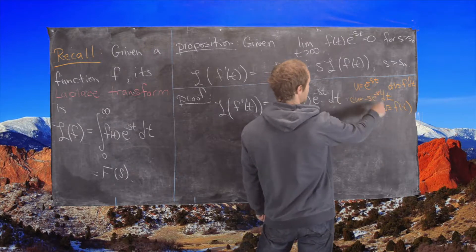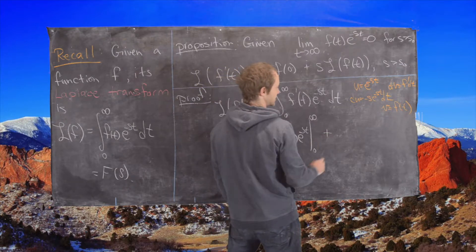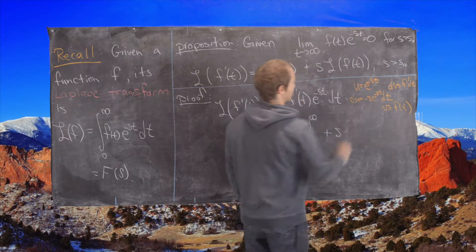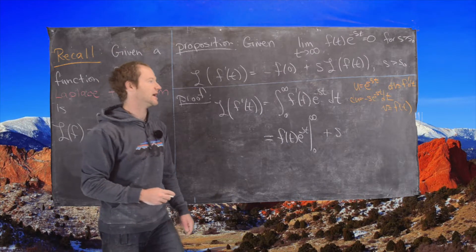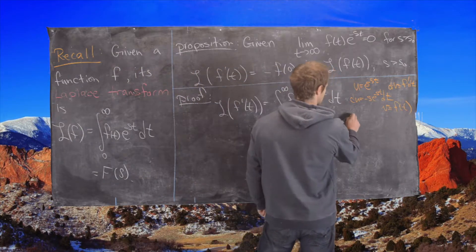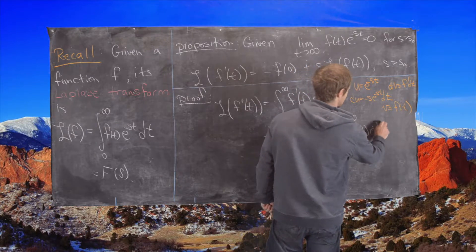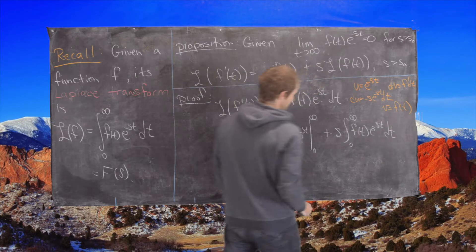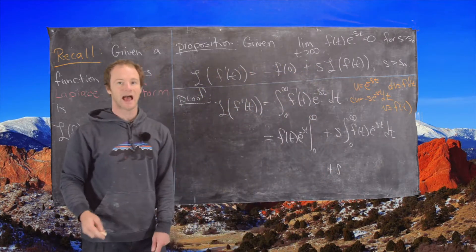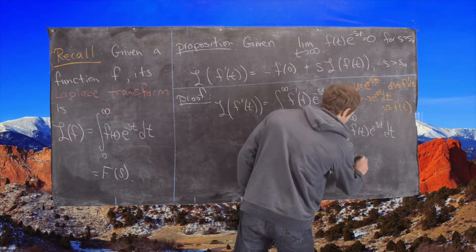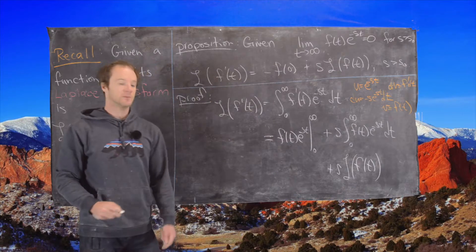And then we're going to subtract v du, but notice du has a minus built in, so that means that's going to turn into addition. We can factor the s out because that's a constant with respect to this t integral, and now we have the integral from 0 to infinity of f(t)e^(-st)dt. Now notice that this bit right here is just exactly s times the Laplace transform of our original function f(t).